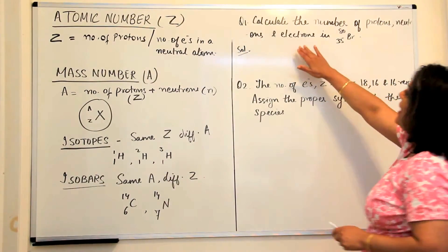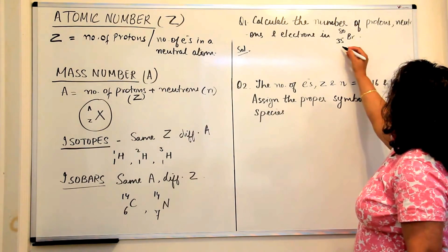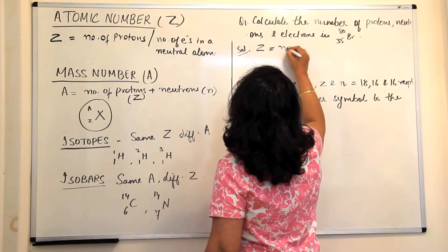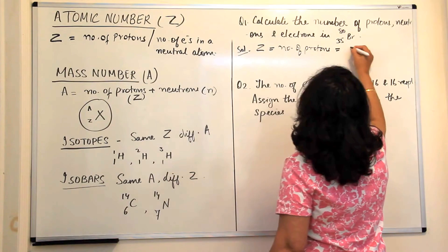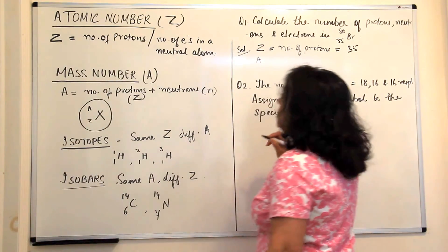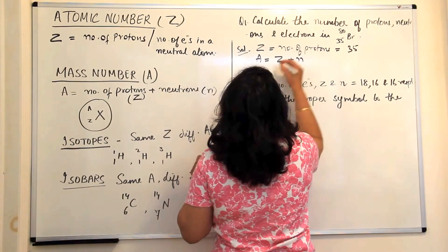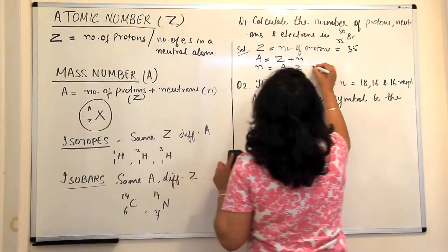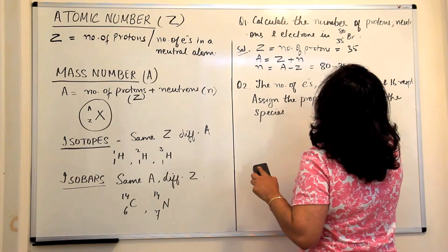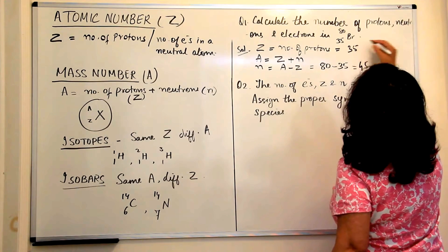Problem 1: Calculate the number of protons, neutrons, and electrons in ³⁵Br⁸⁰. If it is 35-bromine-80, the lower number gives us Z, the atomic number, so number of protons equals 35. For the number of neutrons: A equals Z plus N, therefore N equals A minus Z, which is 80 minus 35, giving us 45 neutrons.